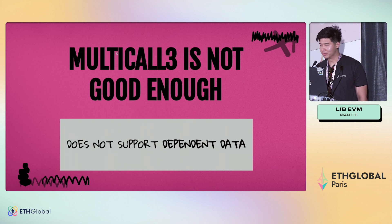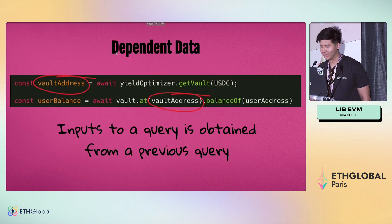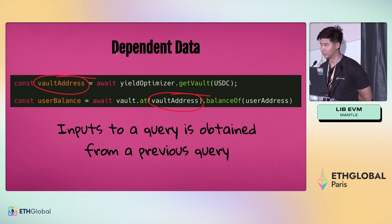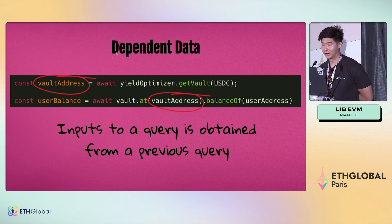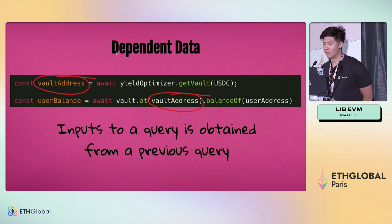Multicall3 is good, but it's not good enough because it does not support dependent data. What I mean by dependent data is cases where the input to the current query is obtained from the output of a previous query. For example, a vault address obtained from a yield optimizer — you'd then want to query that address to get the bounds of your vault, which is simply not possible with Multicall3 because it is stateless.